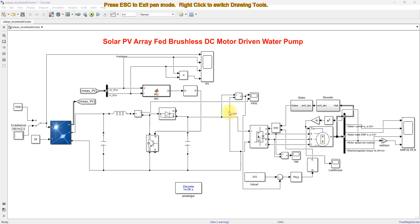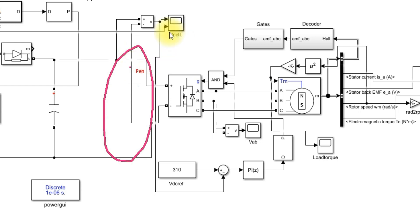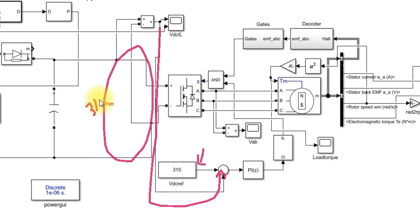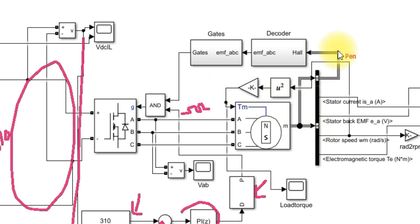This is the DC bus, and we are applying DC bus voltage control by measuring the DC bus voltage and comparing it with 310 volts to maintain it at that level. This is processed via a PI controller and then through a PWM generator to generate pulses. Additionally, we are measuring the hall sensor output, which is converted into back EMF, and then the back EMF is converted into a gating pulse.